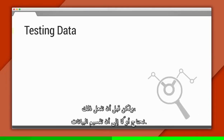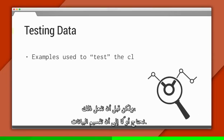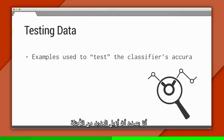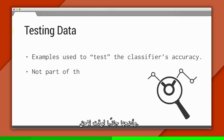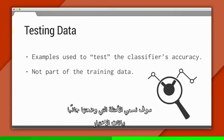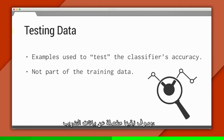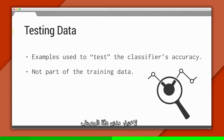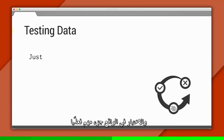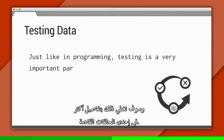But before we do that, first we need to split up the data. I'm going to remove several of the examples and put them aside for later. We'll call the examples I'm putting aside our testing data — we'll keep these separate from our training data. Later on, we'll use our testing examples to test how accurate the classifier is on data it's never seen before. Testing is actually a really important part of doing machine learning well in practice, and we'll cover it in more detail in a future episode.